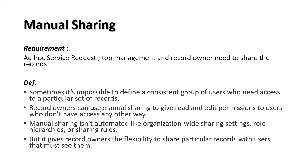Record owners can use manual sharing to give read and edit permissions to users who do not have access any other way. We have OWD, role hierarchy, and sharing rules — if none of them is giving access to a particular user, that is where we can go ahead with manual sharing. Manual sharing isn't automated like OWD, role hierarchy, or sharing rules; we have to explicitly configure that change. That is why it is called manual sharing — once OWD is set, it automatically calculates who should see those records.